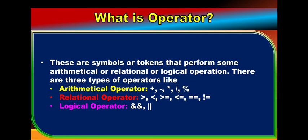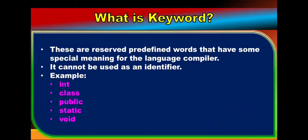Next is what is an operator. Operators are symbols or tokens that perform arithmetical, relational, or logical operations. There are three types: arithmetical operators, relational operators for comparison, and logical operators for compound conditional statements. Finally, what is a keyword? Keywords are reserved, predefined words — predefined means already defined by Java developers — that have special meaning for the language compiler. They cannot be used as identifiers. Examples: int, class, public, static, void. Hope you understood — thank you very much.